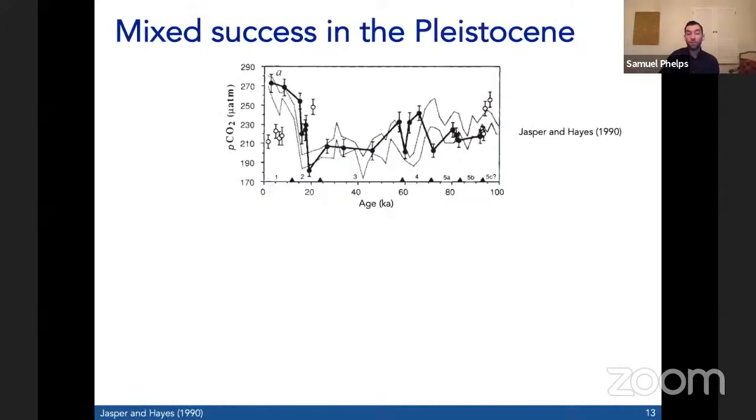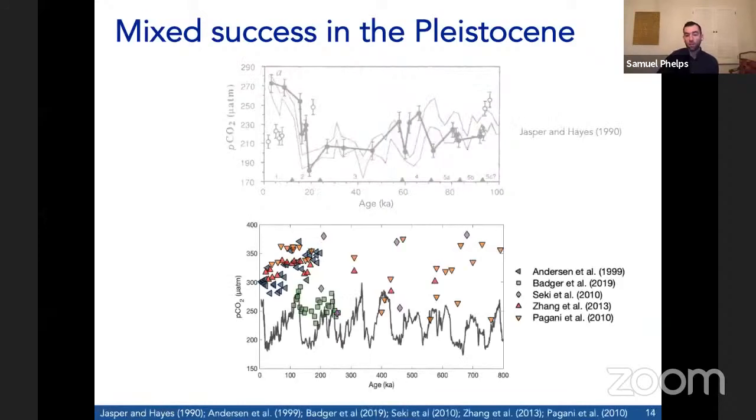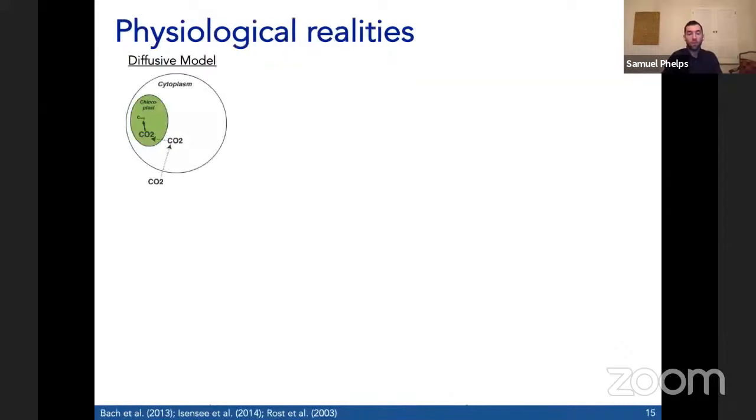When we look at the Pleistocene where CO2 changes are known, the first record to try this suggested that glacial to interglacial changes in CO2 could be reconstructed from alkenone EP. This is the pioneering study by Jesper and Hayes in 1990, showing close correspondence between the ice core CO2 record and CO2 levels estimated from alkenone carbon isotope ratios. But as more data were generated over the last 20 years, it became clear that not all locations behave the same way, and that alkenone fractionation is likely more complicated than the classical or conventional method assumes.